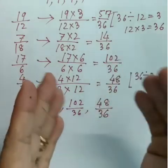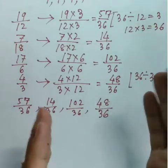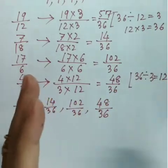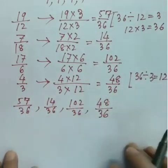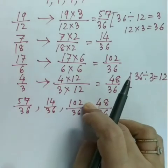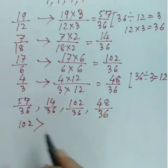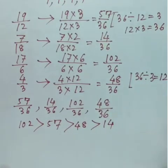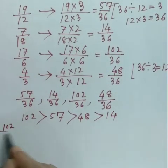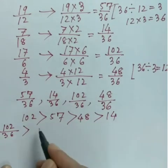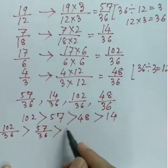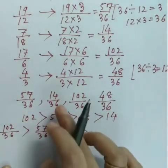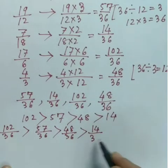For descending order (big to small): 102 is the greatest, then 57, then 48, then 14. So: 102/36 > 57/36 > 48/36 > 14/36. We write this in descending order.